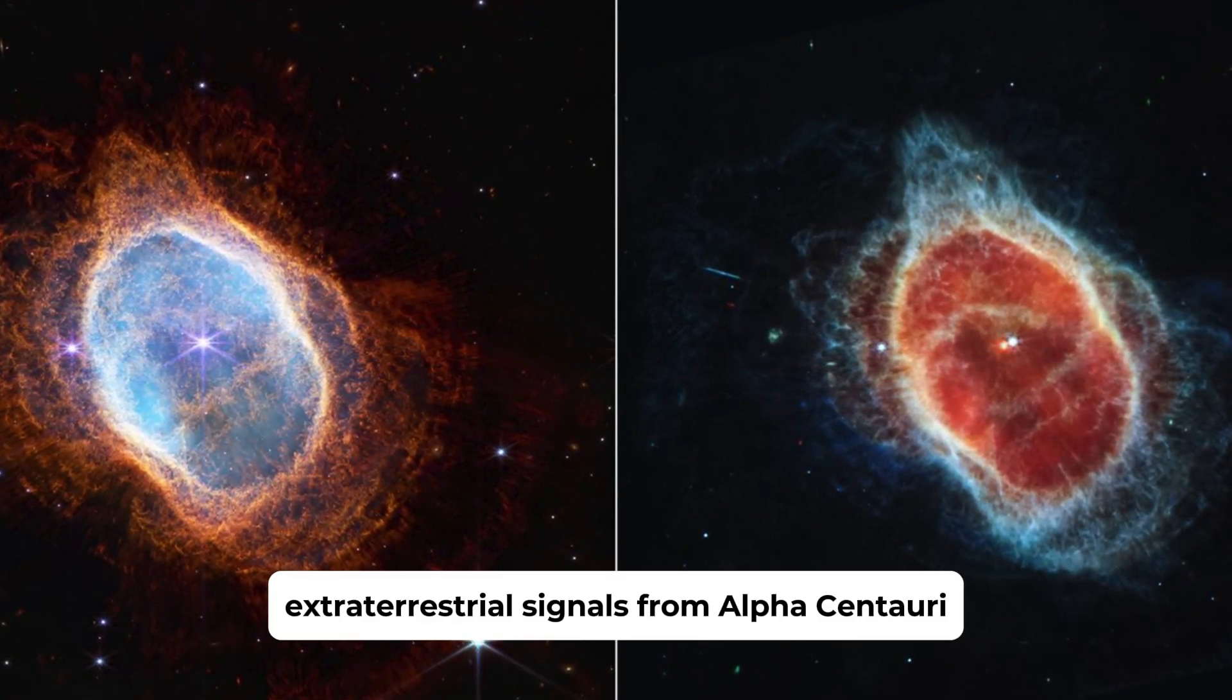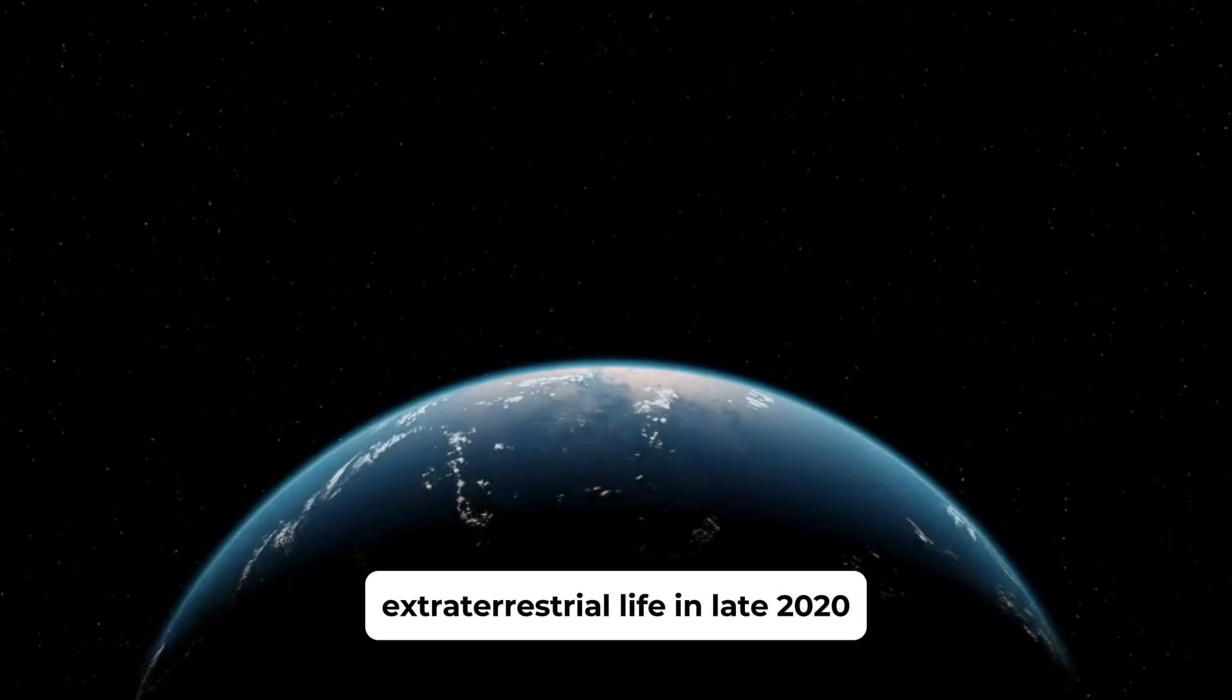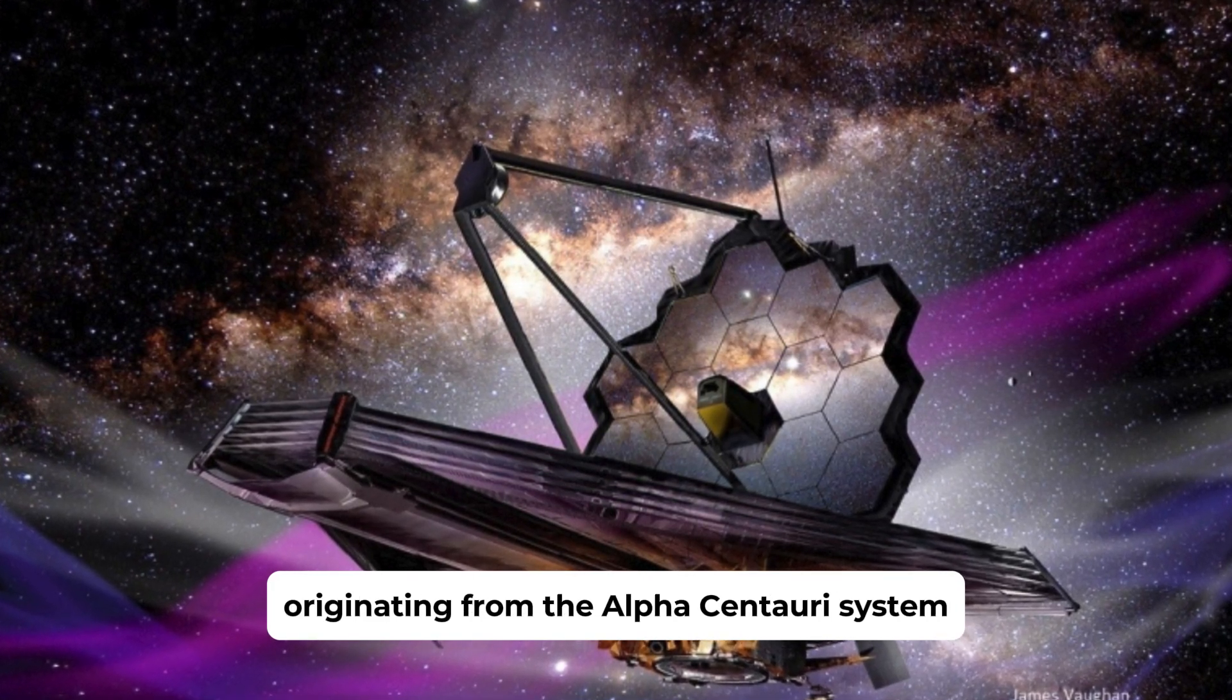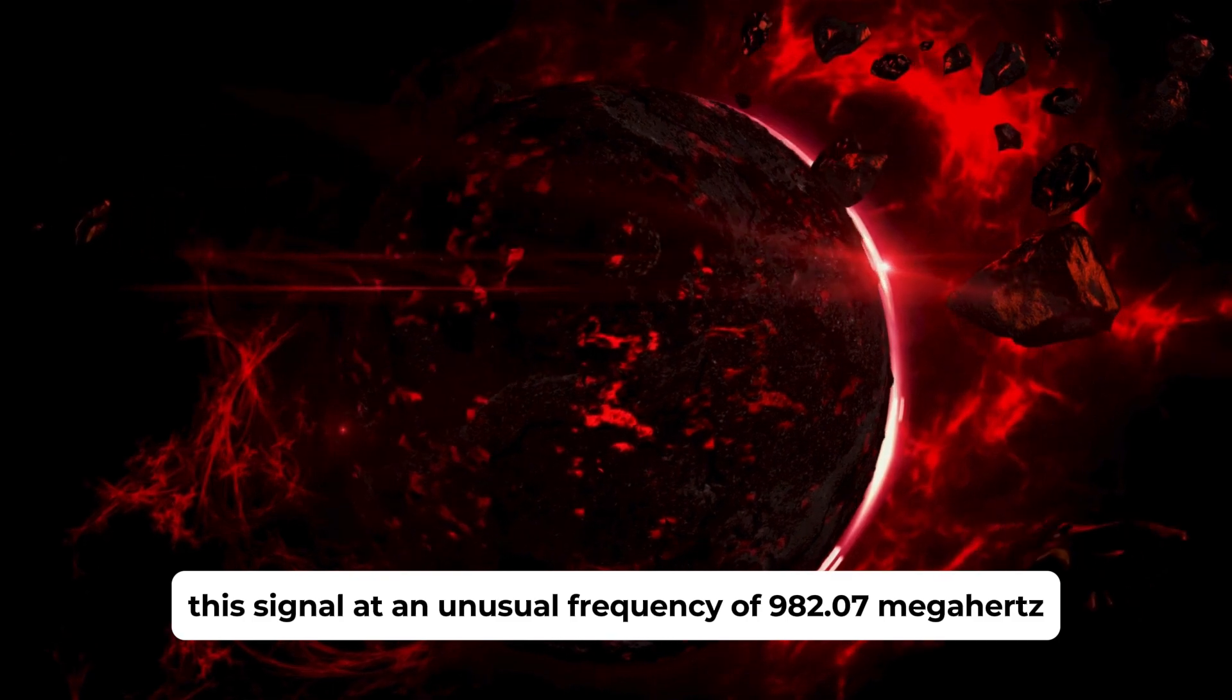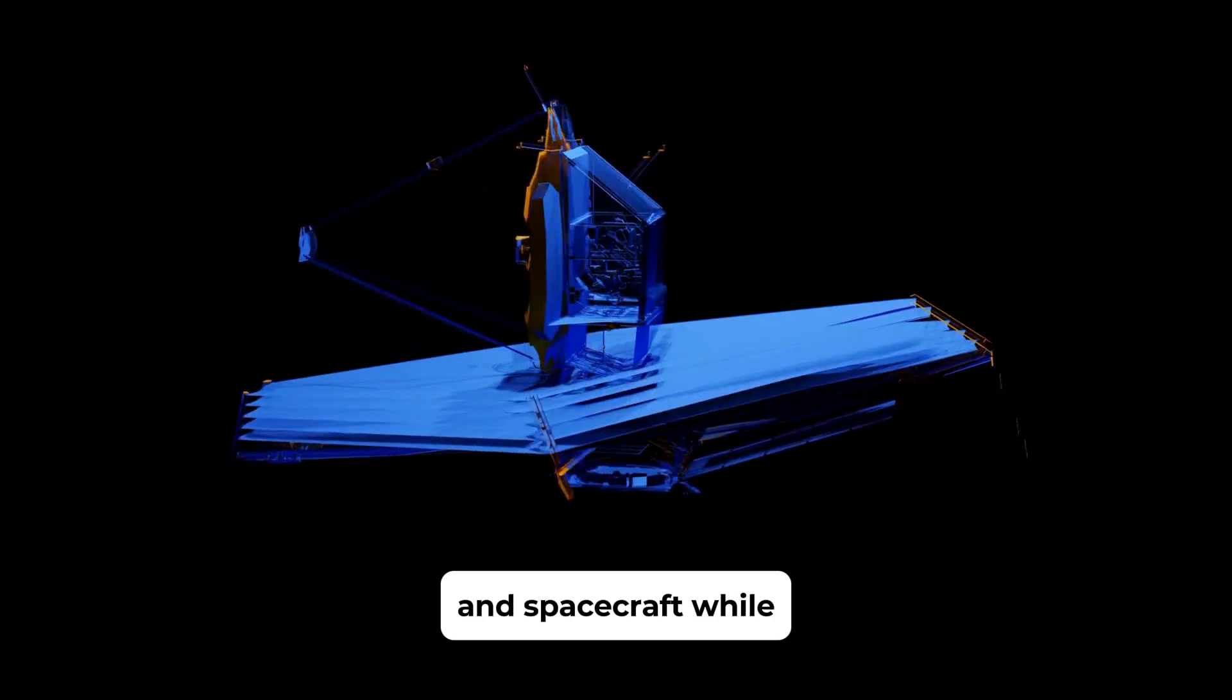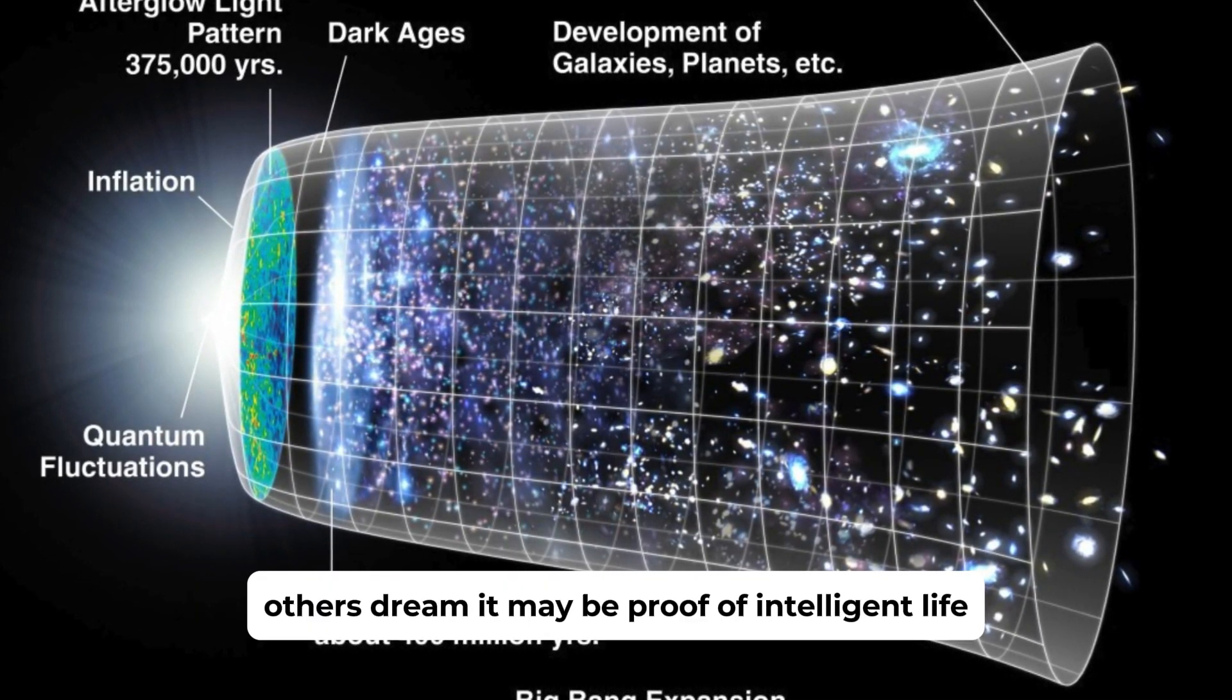Extraterrestrial Signals from Alpha Centauri. As humans, we are fascinated by the possibility of encountering extraterrestrial life. In late 2020, this fascination reached new heights with the discovery of a peculiar signal originating from the Alpha Centauri system. This signal, at an unusual frequency of 982.07 MHz, is not typically associated with Earth-based satellites and spacecraft. While some experts speculate that the signal may be caused by manufactured equipment, others dream it may be proof of intelligent life.